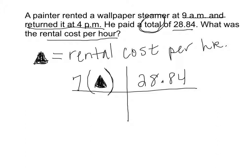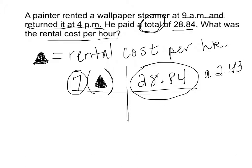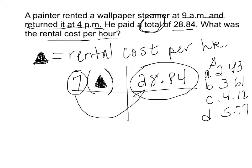It's not adding or subtracting — it's dividing, because it's 7 times whatever the rental cost is equal to $28.84. The opposite of times, of course, is dividing. So we're asking how many times does 7 go into $28.84. On a standardized test, we may not need to go down to the penny. Looking at the choices — A: $2.43, B: $3.61, C: $4.12, D: $5.77 — if 7 goes into $28 about four times, and there's an answer with a 4, we can bet it's $4.12.